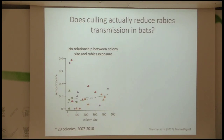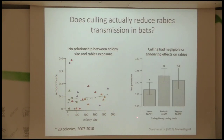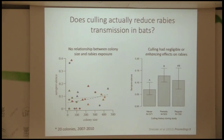With those data, I first wanted to ask: does culling actually do anything to reduce rabies? The first signal we had that it might not was just looking at the relationship between the size of bat colonies and seroprevalence to rabies — a measure of how much exposure is happening. There really wasn't much of a positive relationship there. That already points to the concerning possibility that if you artificially reduce colony size, you might not reduce the amount of rabies transmission.